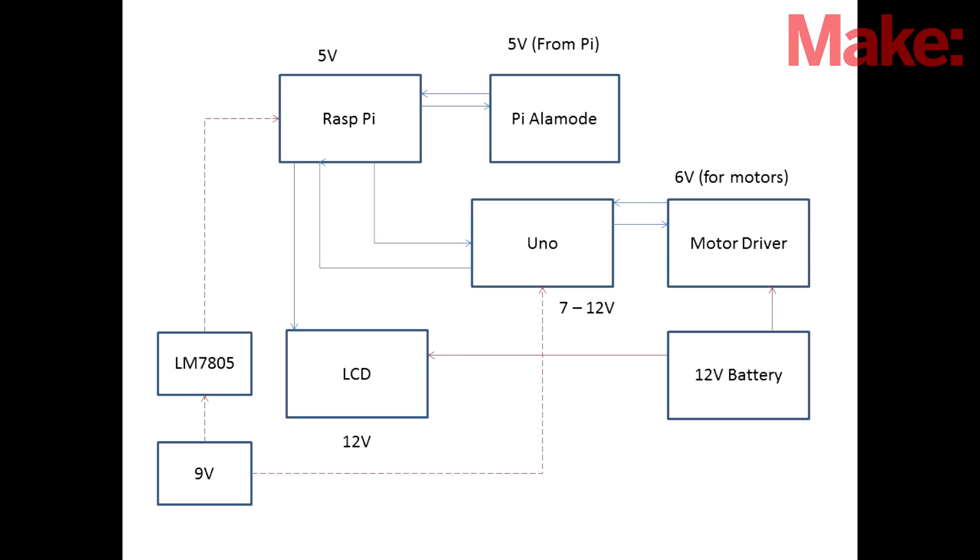To power up the rest of the circuitry, I'll actually use a nine volt battery. Nine volts can directly be fed into an Uno. And for the Raspberry Pi, I can use an LM 7805 voltage regulator to take it down to five volts for use on that platform. And again, the Alamode gets five volts directly from the Pi itself.